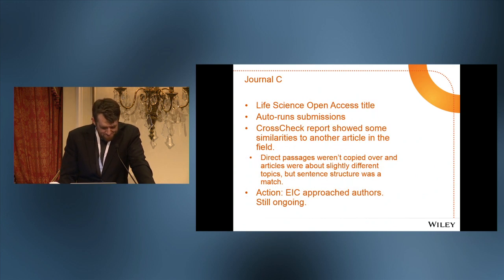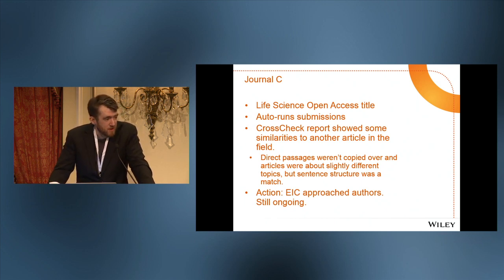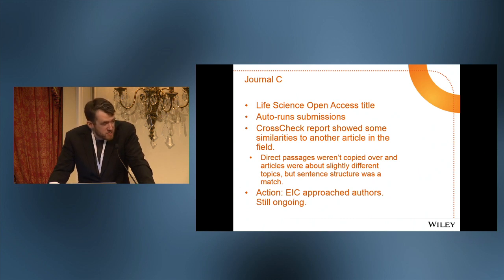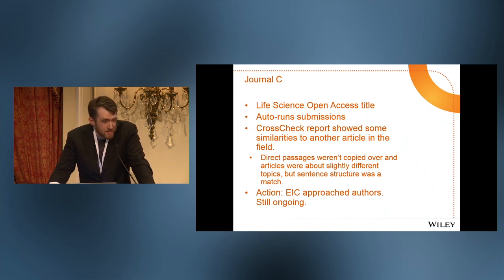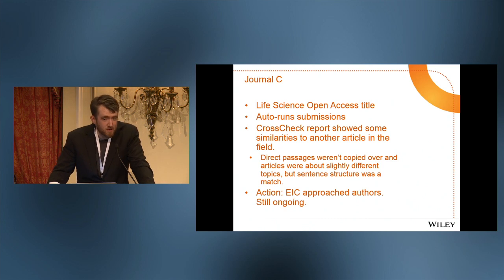Journal C is a weird one — a life science open access title that auto-runs through ScholarOne. The CrossCheck report showed similarities to another article in the field. If the published article said, for example, '0.8% of the wooded sections of Asia had this,' the manuscript had '1.1% of wooded sections of Africa' — different stats, different context, but exactly the same sentence structure as another article. The manuscript author did attribute properly, but the editors noticed it was suspicious that only some numbers and locations had changed. That one is still ongoing, so I don't have a resolution for it.